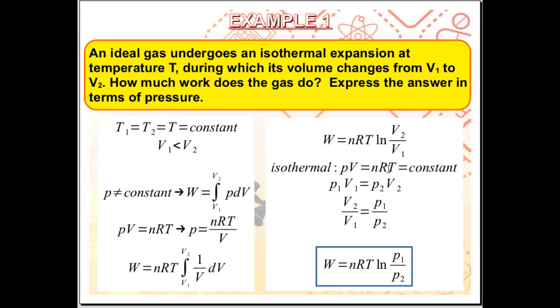For an isothermal process, PV is equal to nRT is equal to constant. Meaning, PV is equal to constant. So, PV in initial state is just equal to PV in final state. P1 V1 is equal to P2 V2.